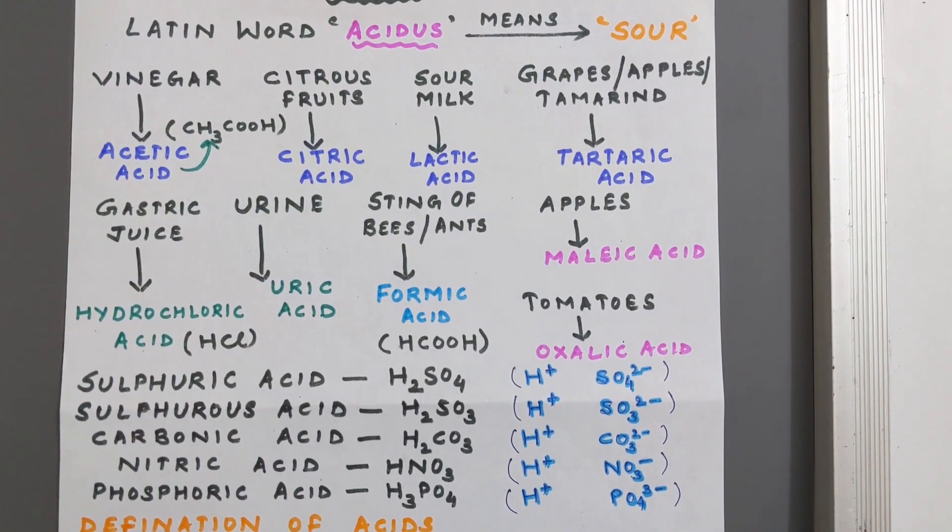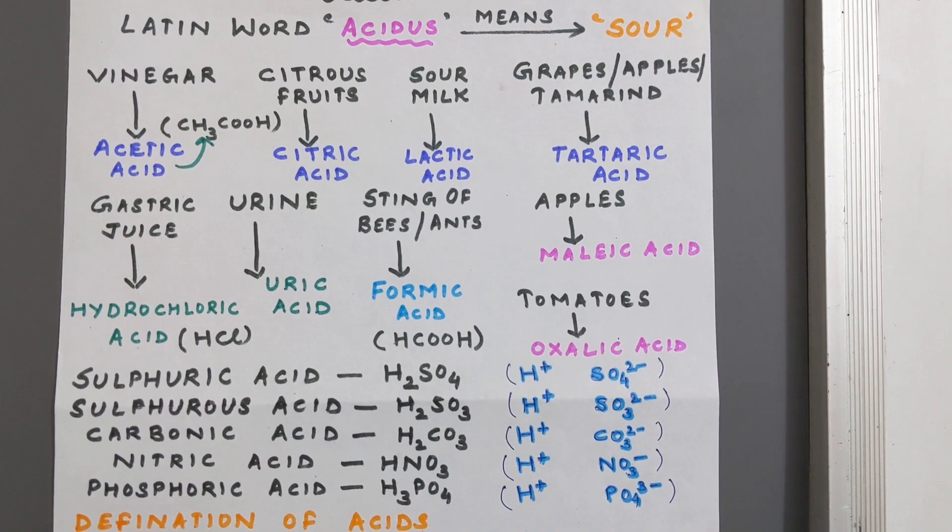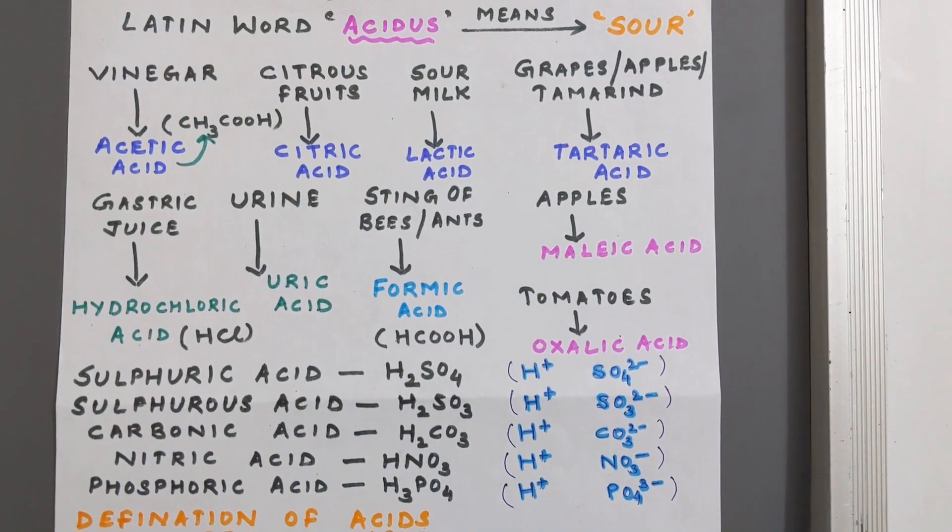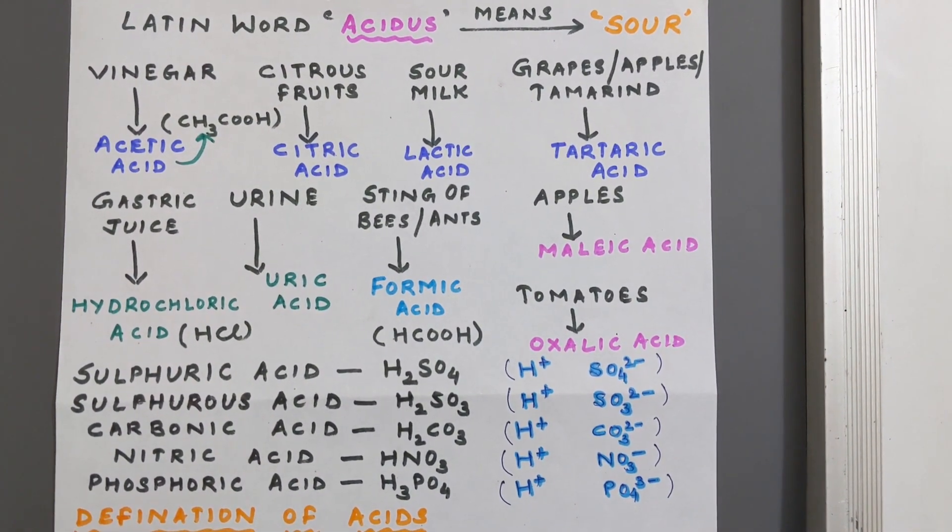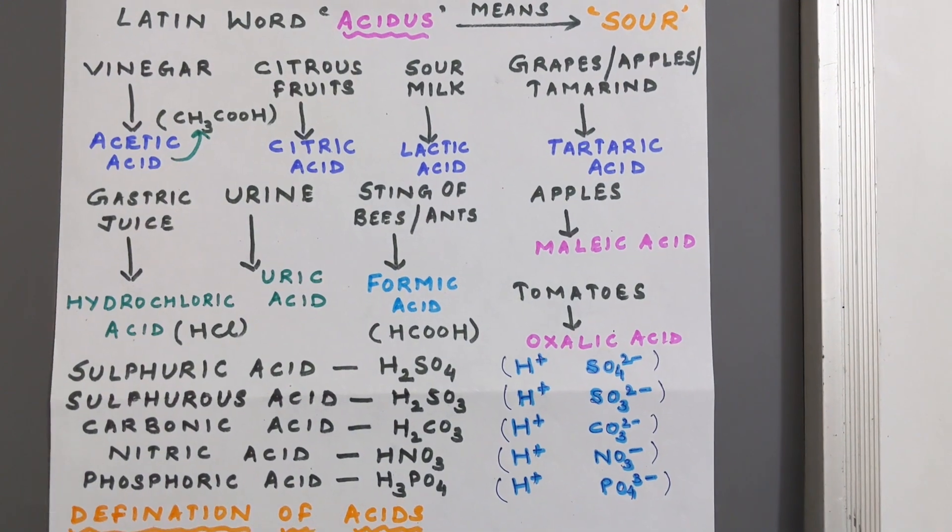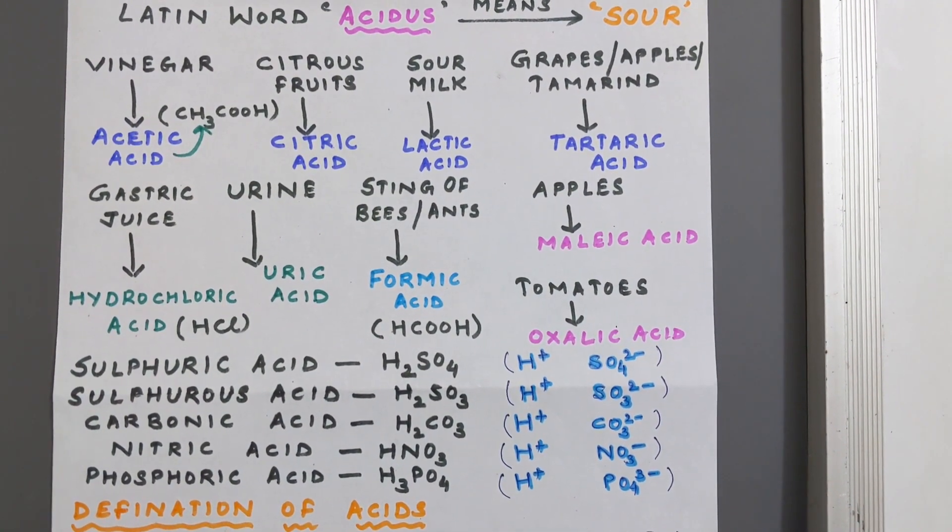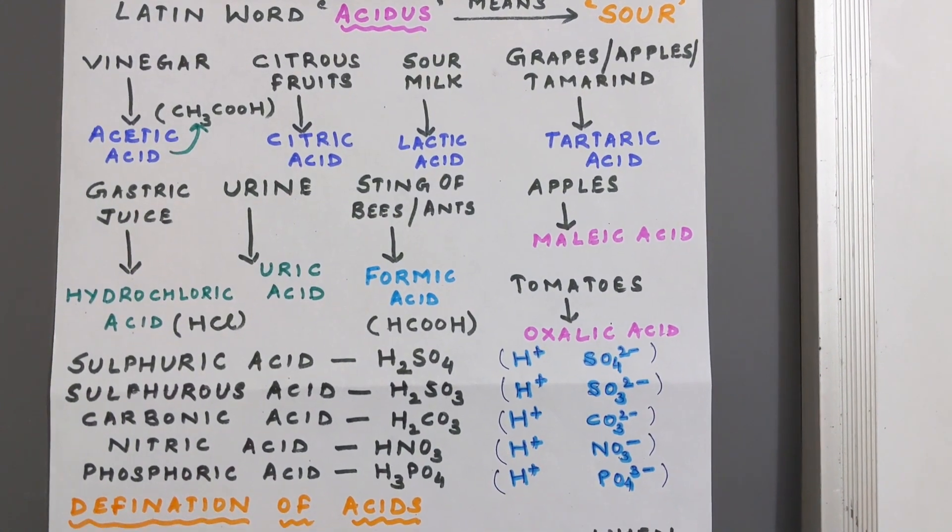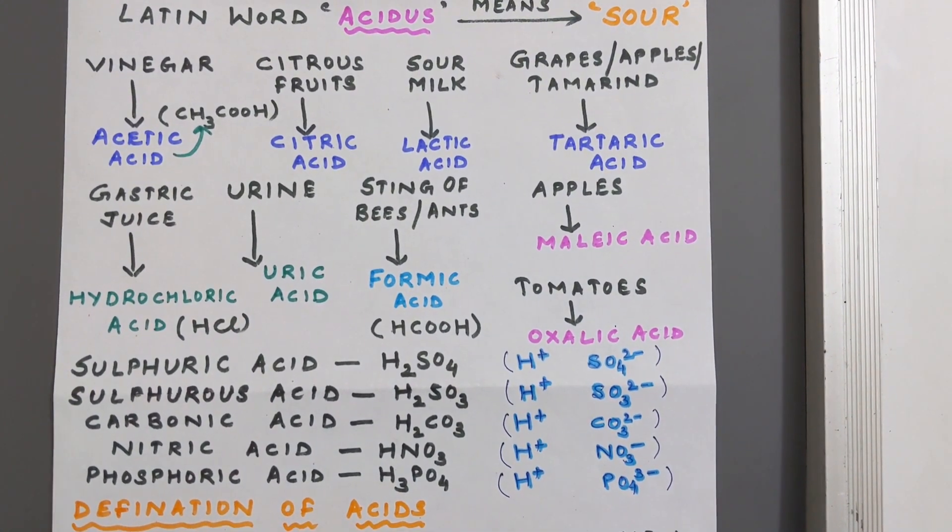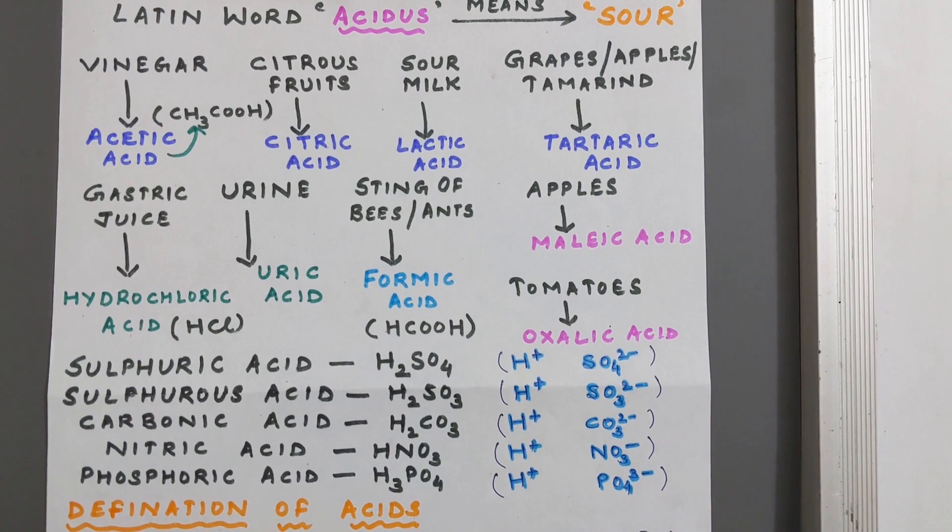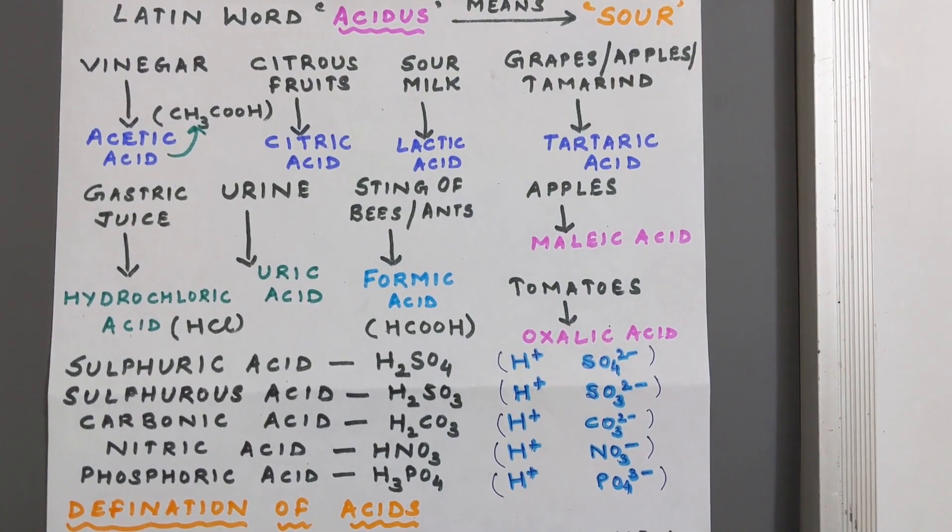These acids are formed from the corresponding ions: hydrogen ion and sulfate ion in case of sulfuric acid, hydrogen and sulfite ion for sulfurous acid, hydrogen ion and carbonate ion for carbonic acid, hydrogen ion and nitrate ion for nitric acid, and hydrogen ion and phosphate ion for phosphoric acid.